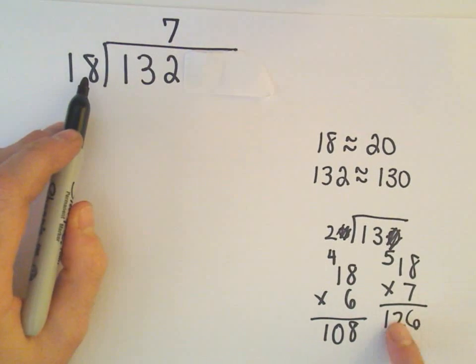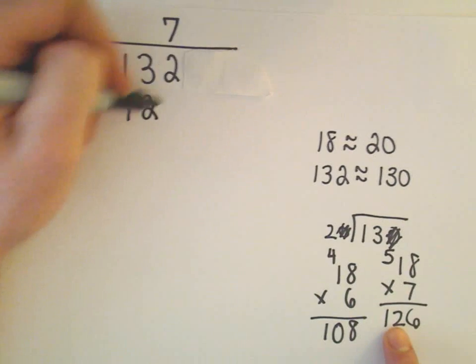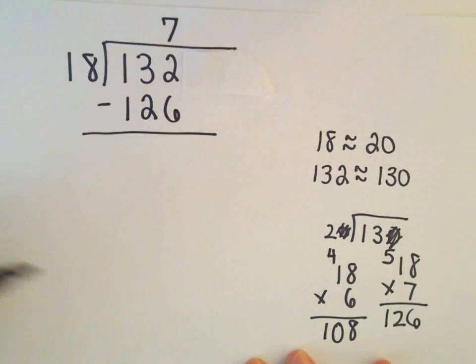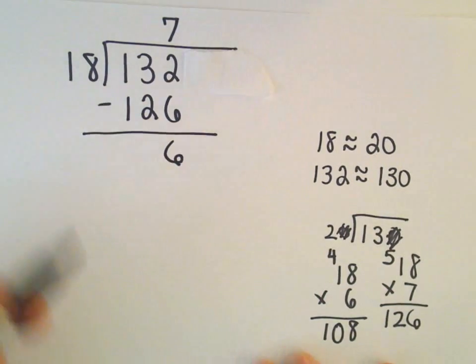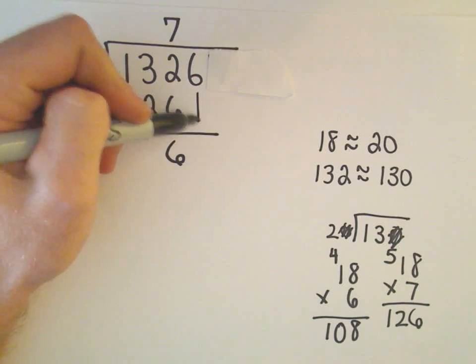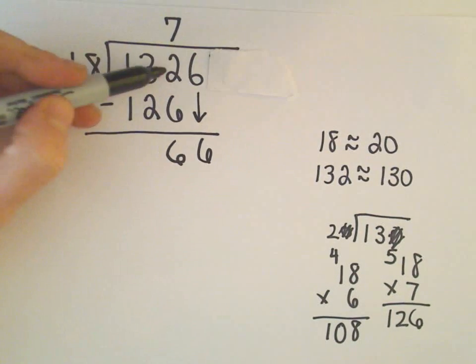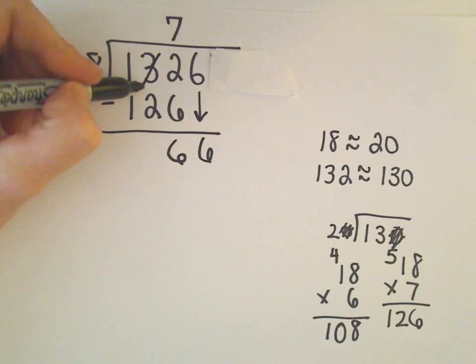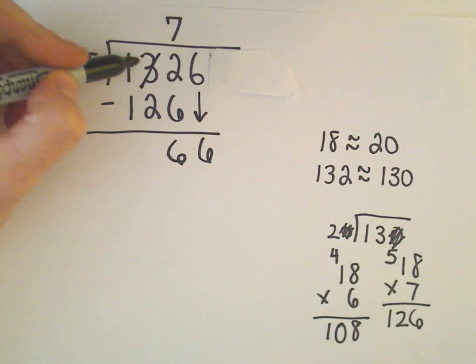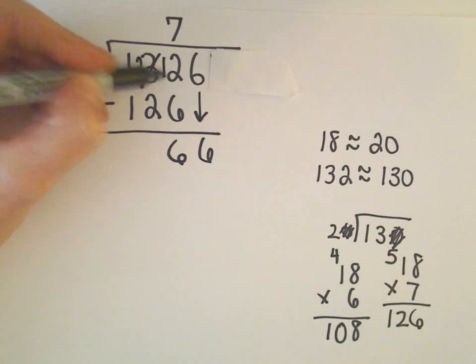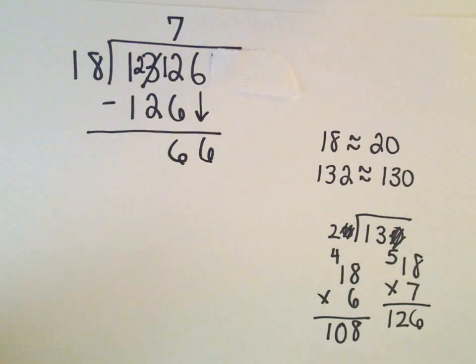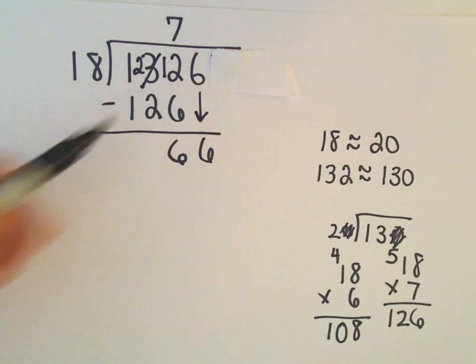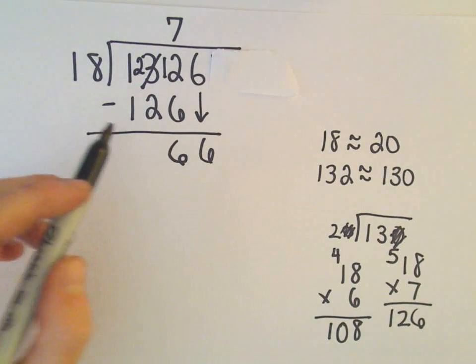So it looks like 18 will go into 132 7 times. And again, we just said 7 times 18 is 126. Now we do our subtraction. Okay, so 132 minus 126 is going to leave us with 6. I'm going to carry down my next digit. And again, to get that, we could say, well, 2 minus 6, we can't do that. So we can carry a digit from the 3. We'll make that into a 2. The 2 would turn into a 12. 12 minus 6 is 6. 2 minus 2 is 0. So again, if you've forgotten subtraction, you may take a glance at that as well, just to save us a second.